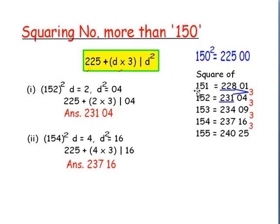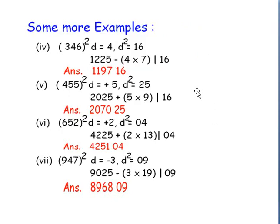Now, squaring a number more than 150: same as before but we add instead of subtract. Let us see in the second example: 154 square. Its difference from 150 is 4, so the difference square will be 16. We write 16, and then 225 plus thrice into the difference — thrice into 4 — which gives 237. So 23716 is the square of 154.